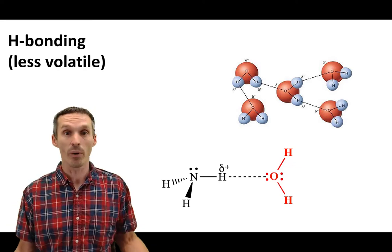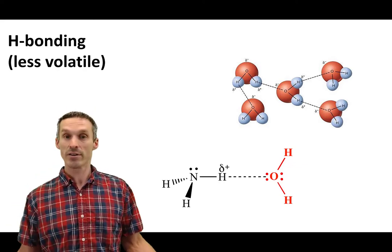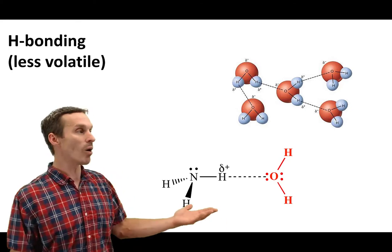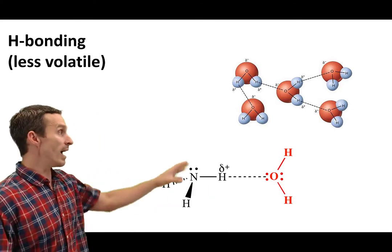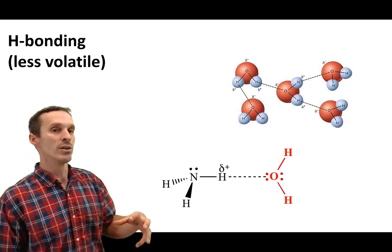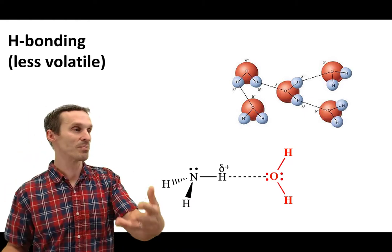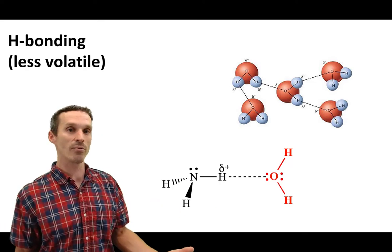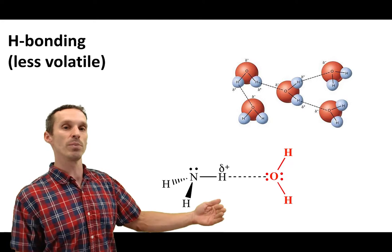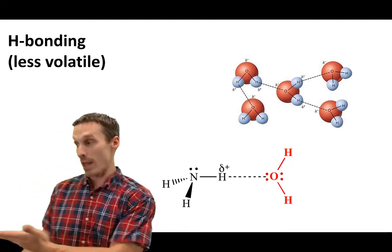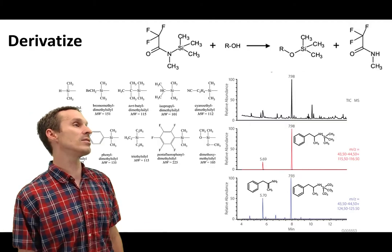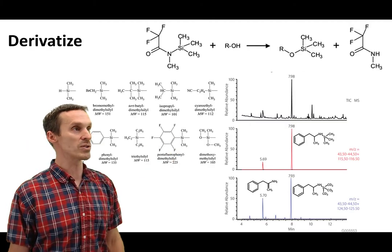And why is that? Because water, like a lot of other molecules, has hydrogen bonding. That's what's kind of gluing these molecules together. So compounds that exhibit this hydrogen bonding network are much less volatile and therefore much less suitable for GC. You might think LC is the obvious choice.